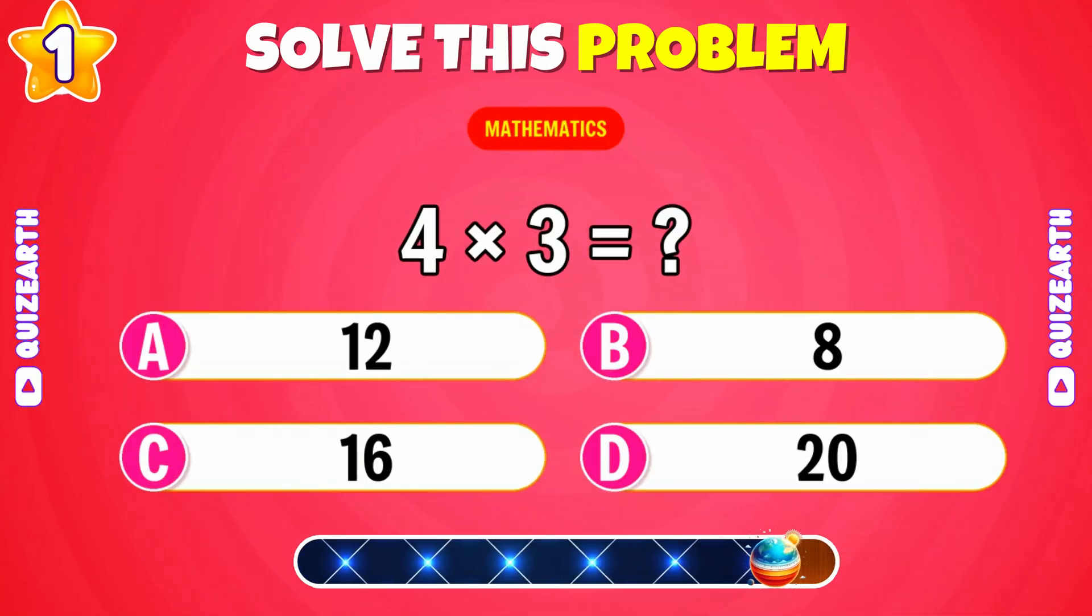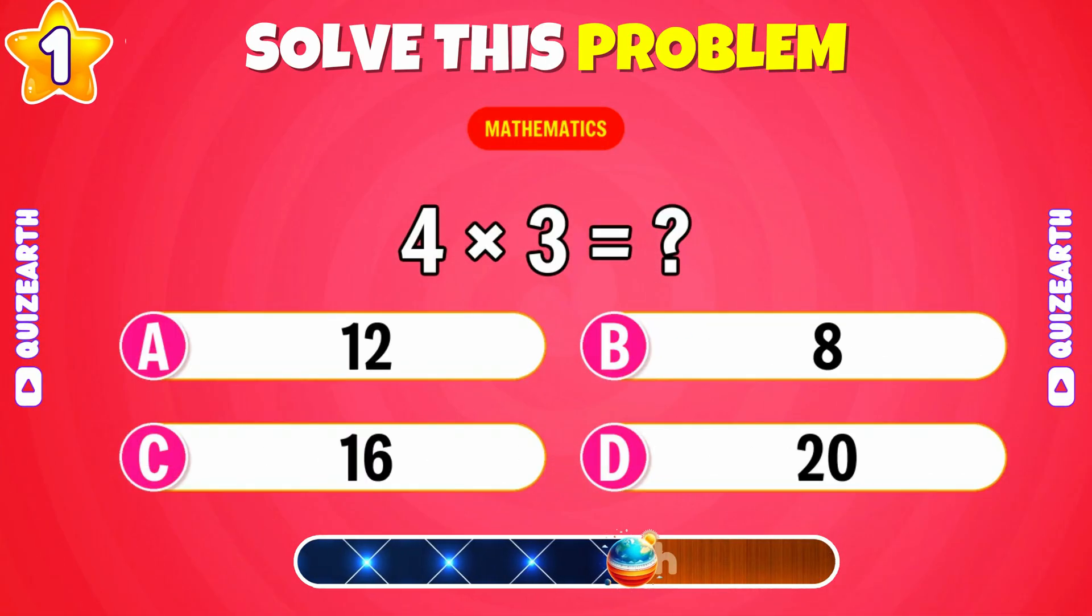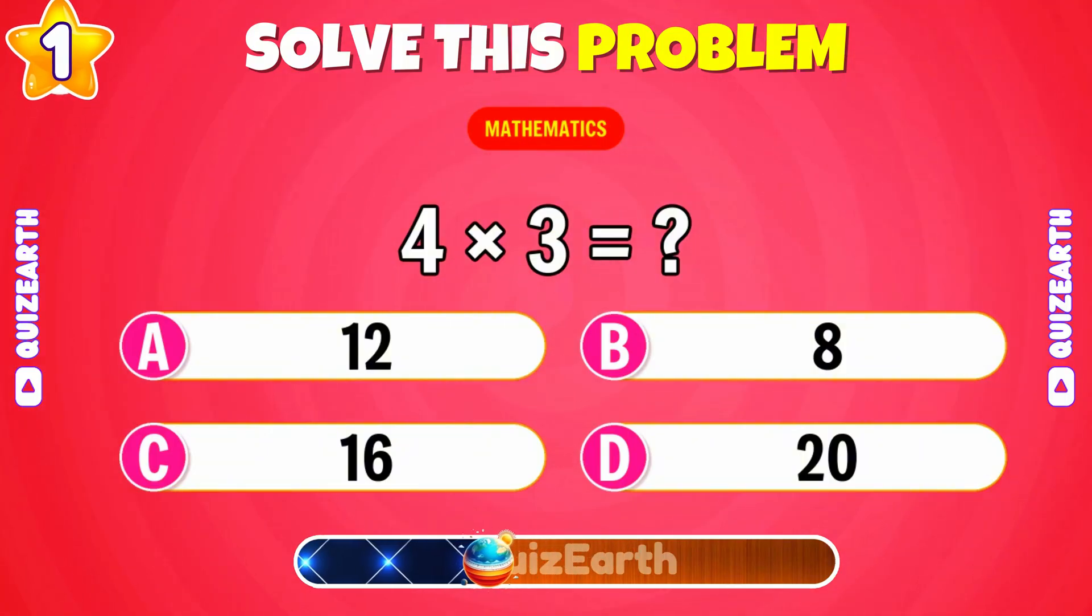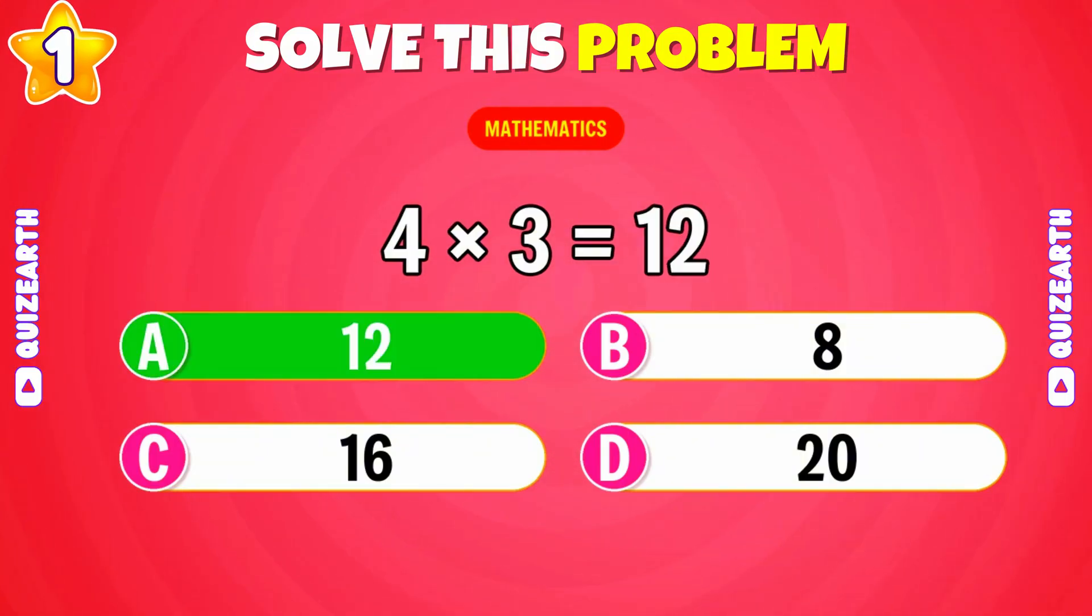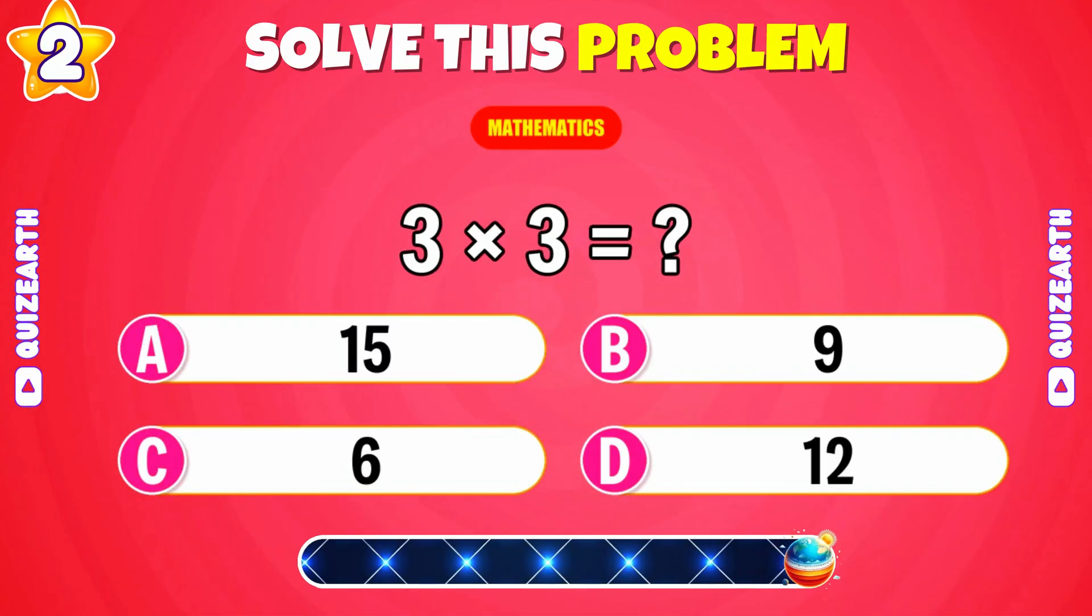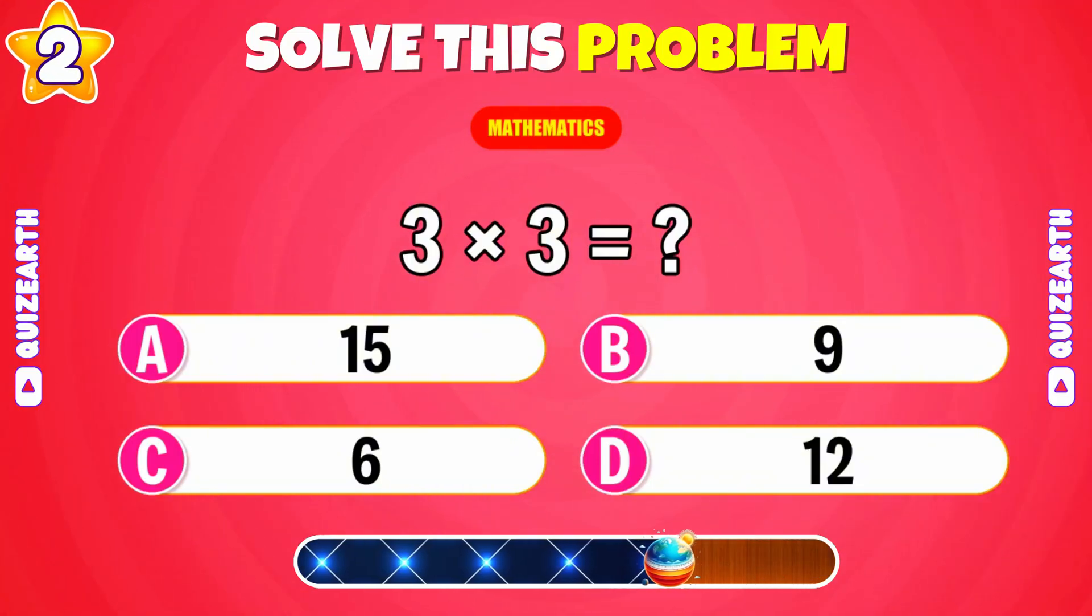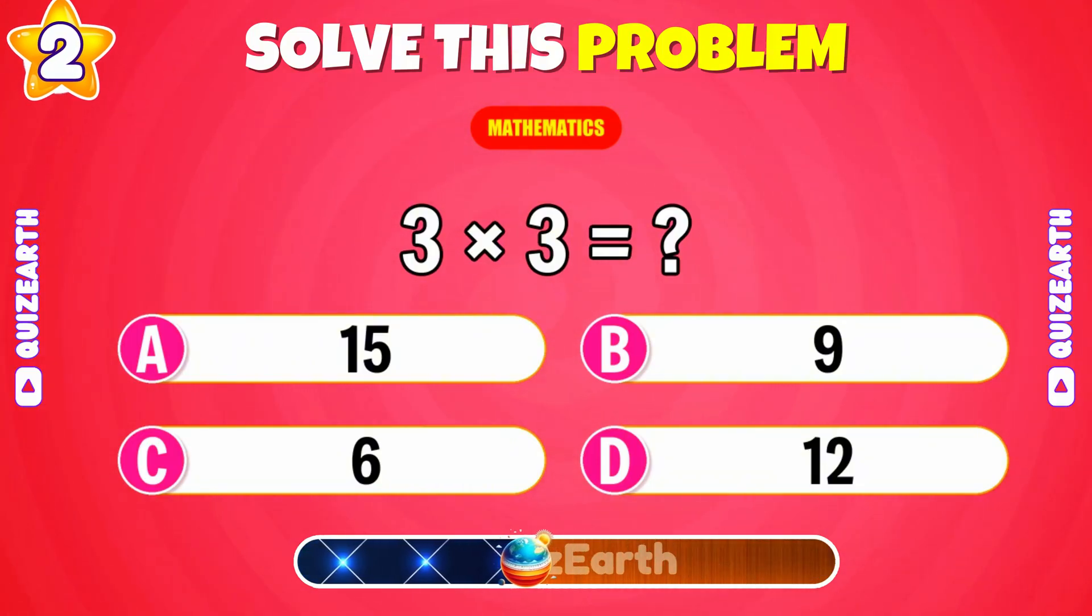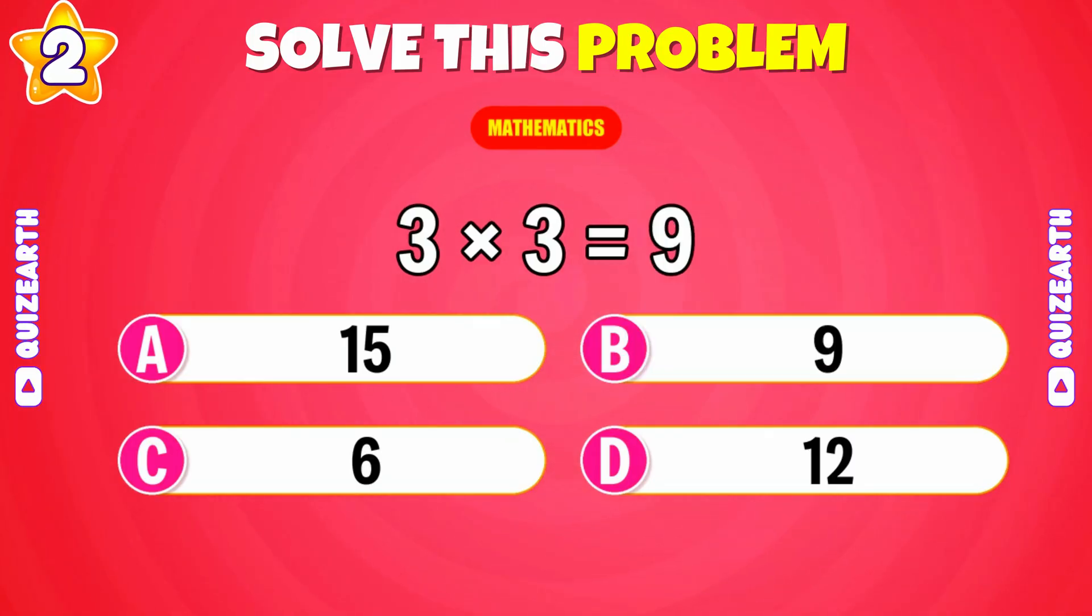Four times three? Yes, it's twelve. Three times three? Perfect, nine.